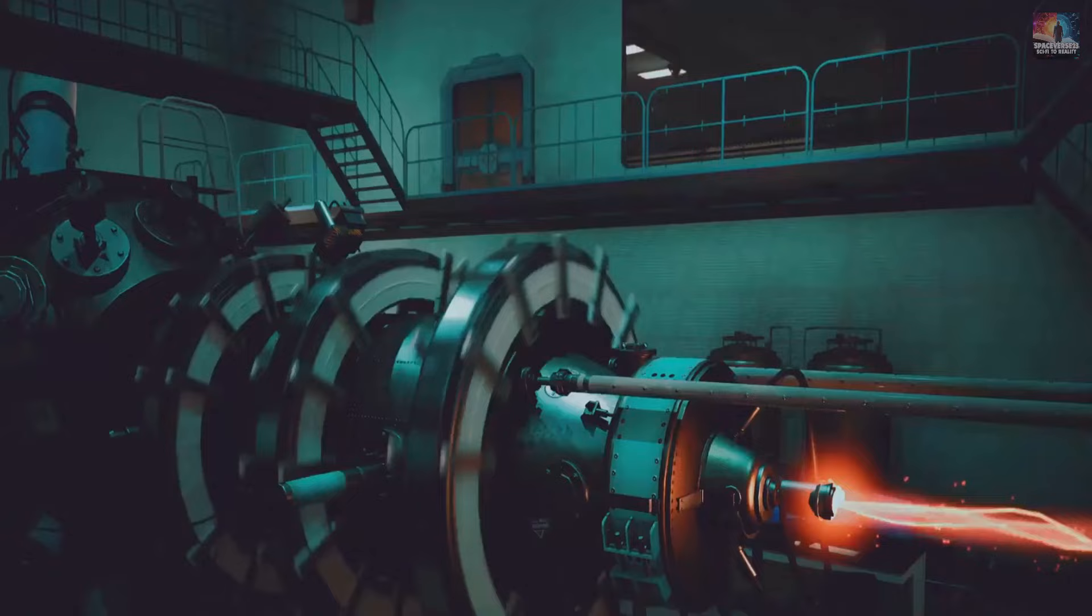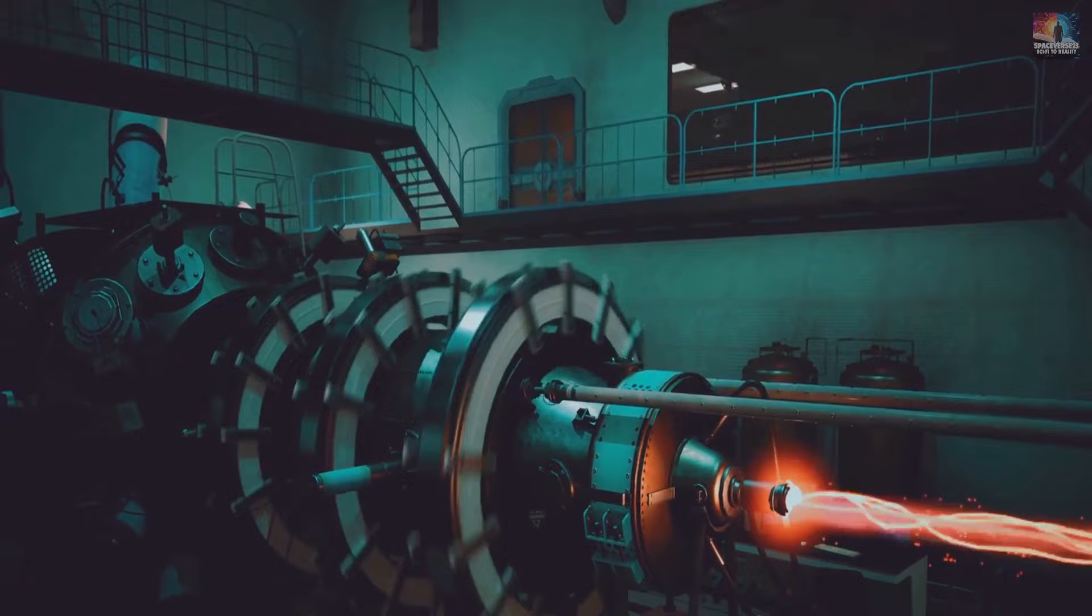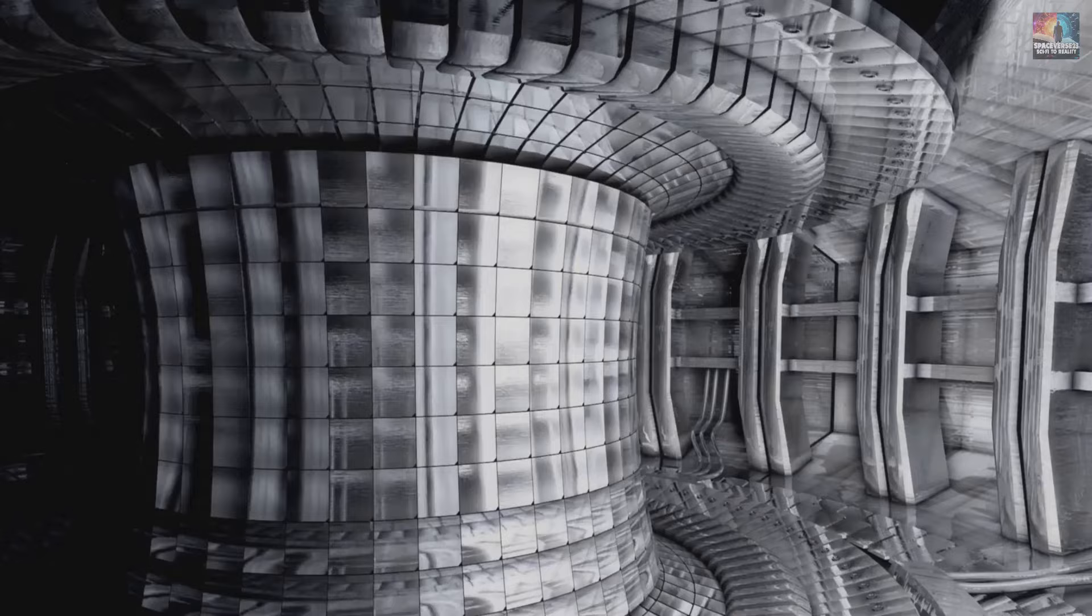To make their plasma burn longer than before, the scientists made some changes to the reactor. They improved the diverters, which take out heat and ash from the reactor, by switching from carbon to tungsten.